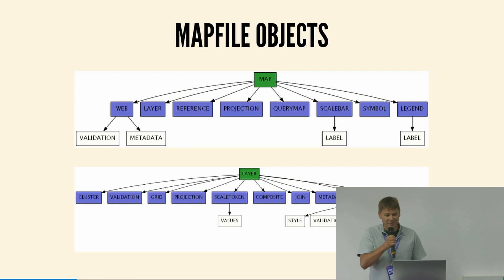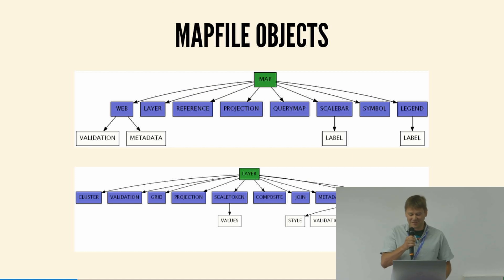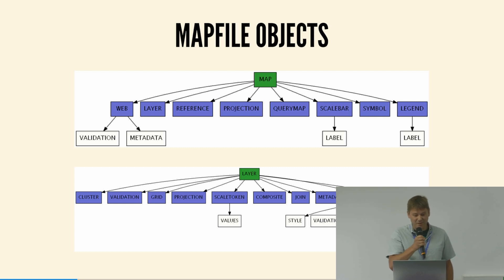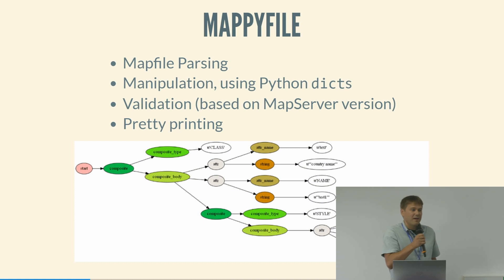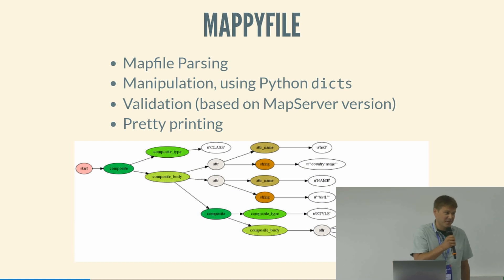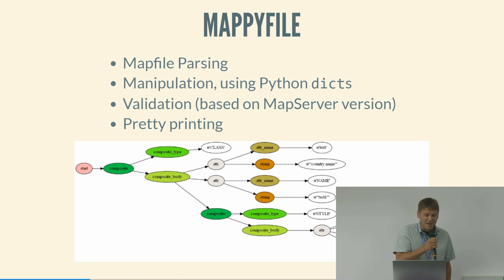The number of objects in a MapFile is quite small — it's a nice simple language to learn. There's the map at the top, and then lots of different blocks, but the layer one is the key one. You can have multiple layers within a MapFile. You can write them by hand in a text editor — most people probably copy and paste from an existing one and modify as needed.